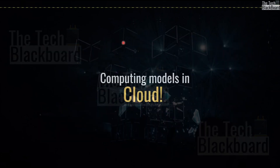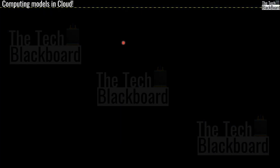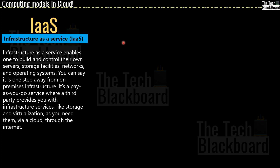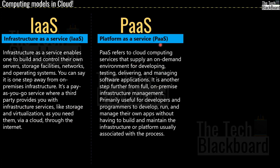Now let's check out the types of cloud services based on computing models. The first is infrastructure as a service, or IaaS. IaaS enables one to build and control their own servers, storage facilities, networks, and operating systems. It is one step away from on-premises infrastructure and is a pay-as-you-go service where a third party provides infrastructure services — like storage and virtualization — as you need them via the cloud through the internet. Then we have platform as a service, or PaaS, which refers to cloud computing services that supply an on-demand environment for developing, testing, delivering, and managing software applications.